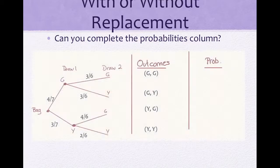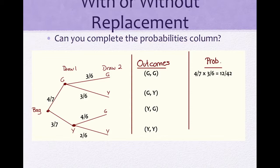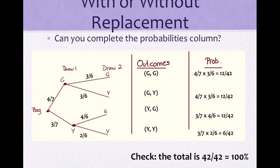Can you complete the probabilities column for this tree? We need to multiply green and green, green and yellow, yellow and green, and yellow and yellow. You'll notice that instead of a denominator of 49, we now have a denominator of 42. We can check by adding 12 + 12 + 12 + 6 = 42/42, which is 100%.